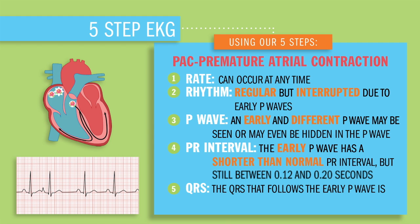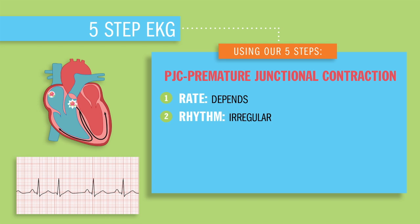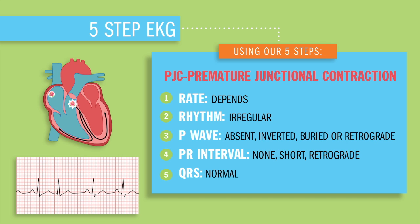Now, PJCs are premature junctional contractions — basically those contractions happening between the atriums and the ventricles. The rate usually depends on the underlying rhythm. The rhythm is mostly irregular, and the P wave is absent, inverted, or even buried inside of that PJC. The PR interval should be none or maybe even shorter, and the QRS is usually normal.